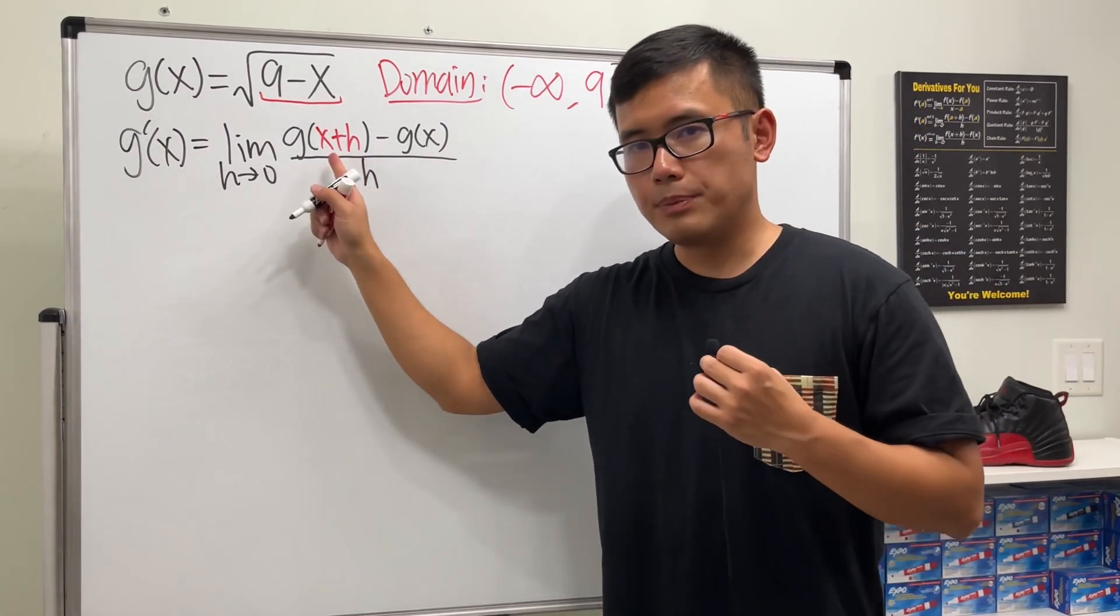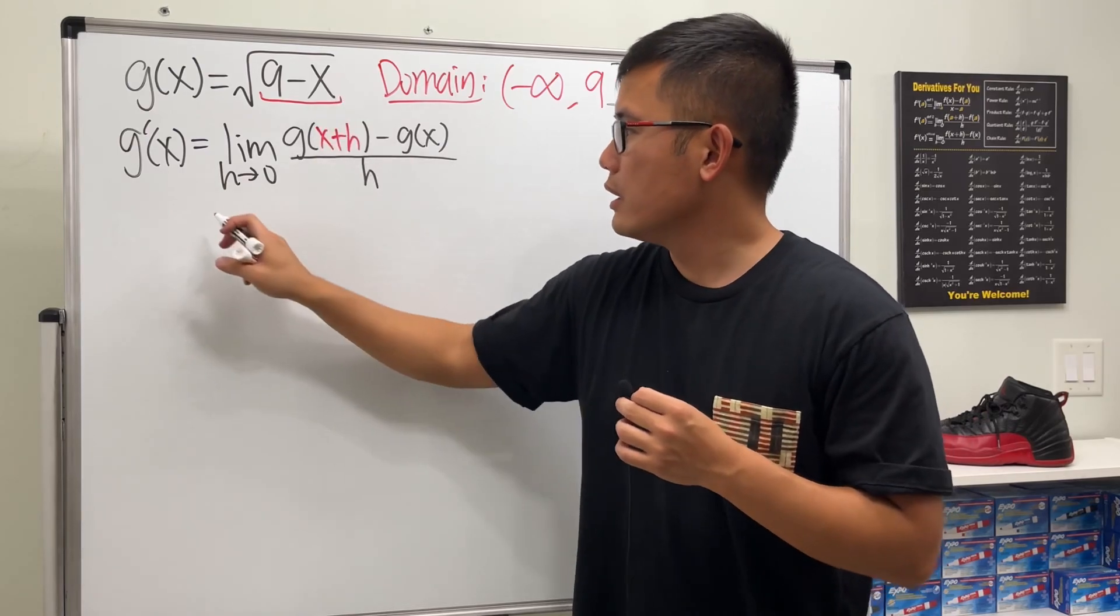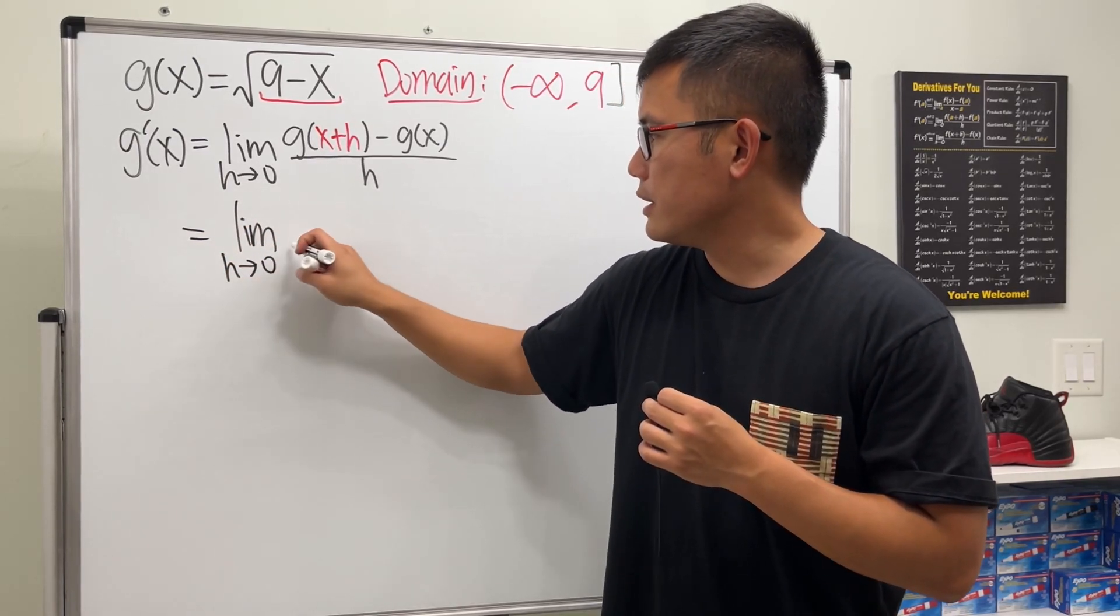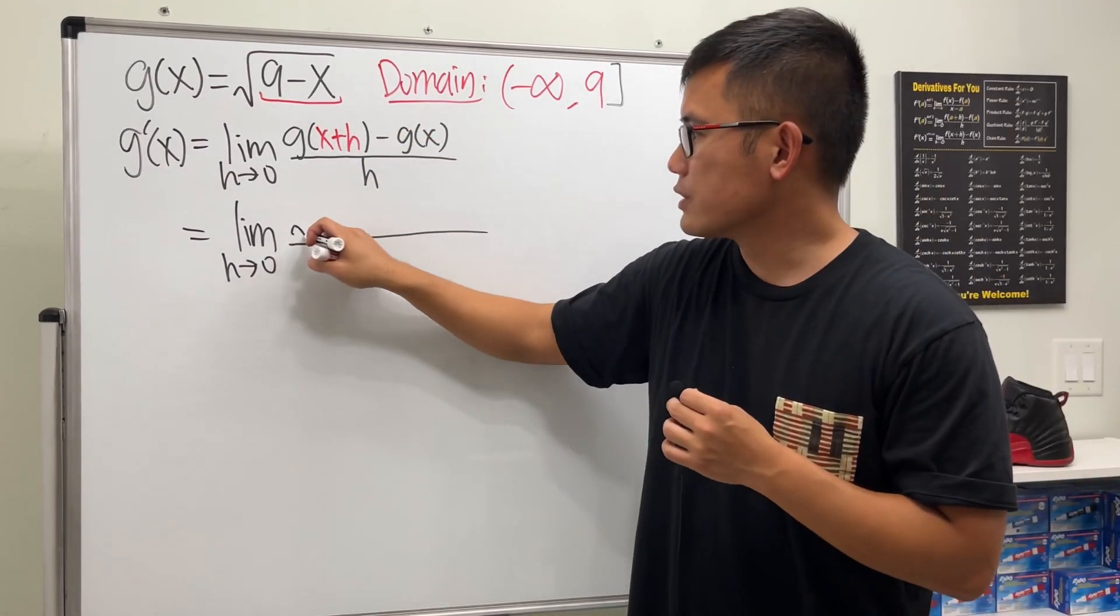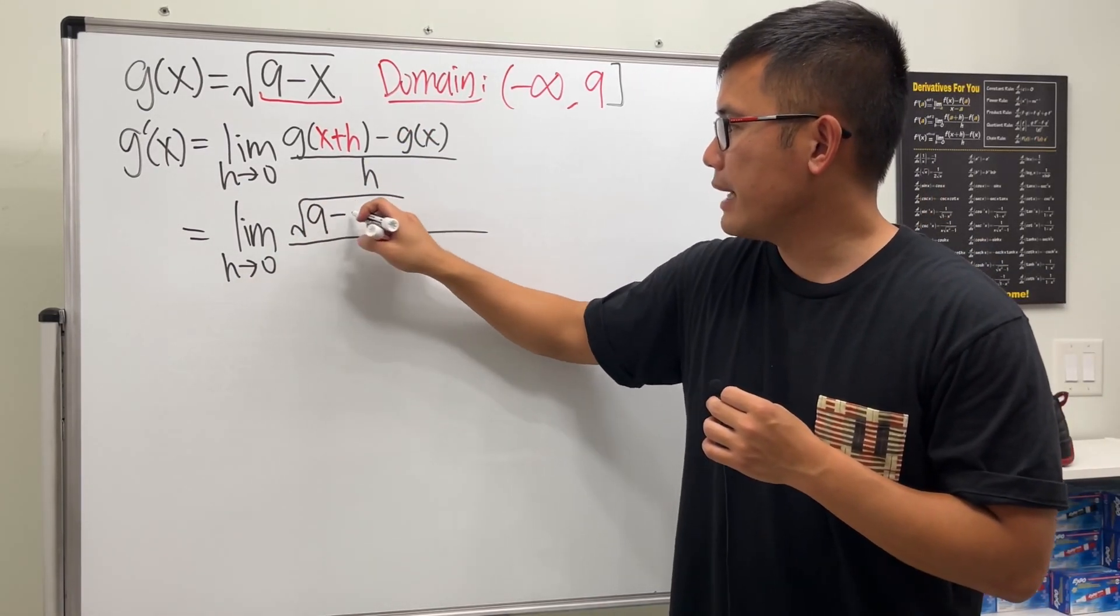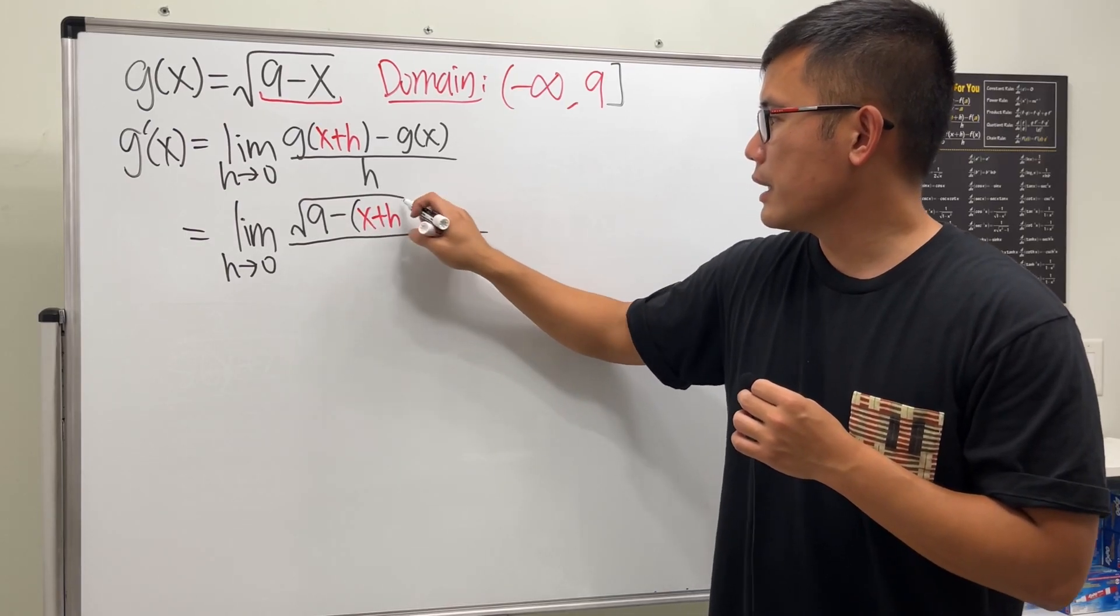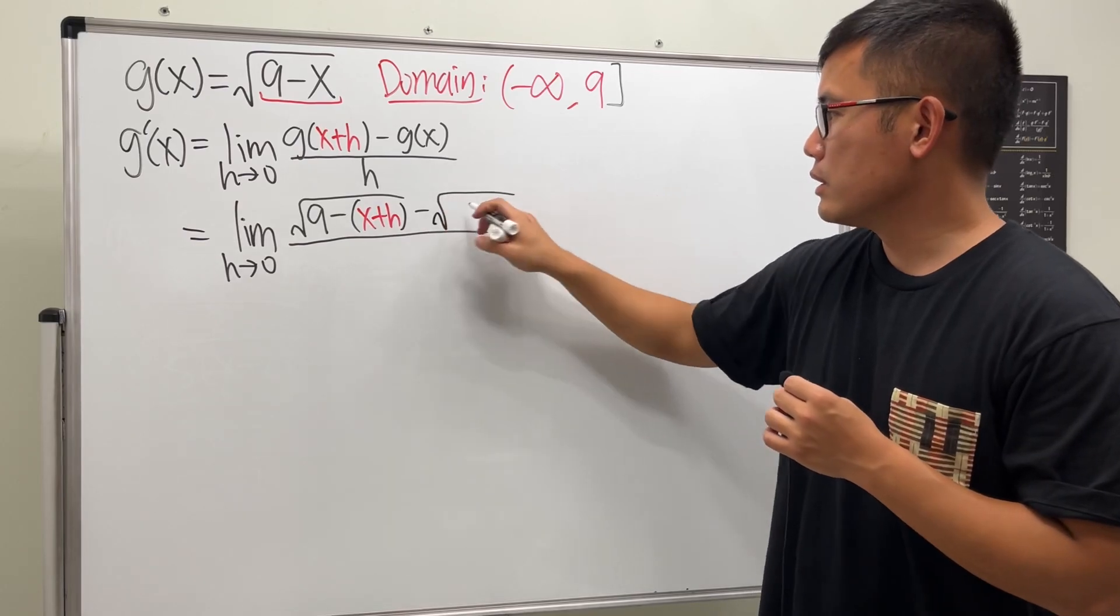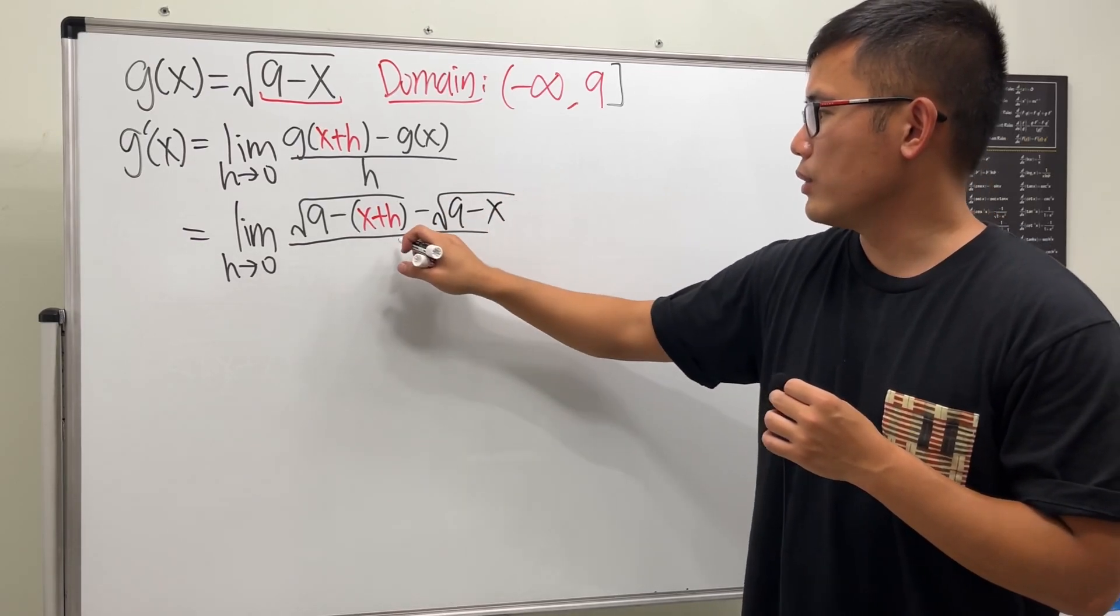For this part, we'll just put the x plus h into here, so we are getting the limit as h approaching 0, and then we have the square root of 9 minus parentheses x plus h, and then minus g of x, which is just the original. So just go ahead and do this, and then over h.